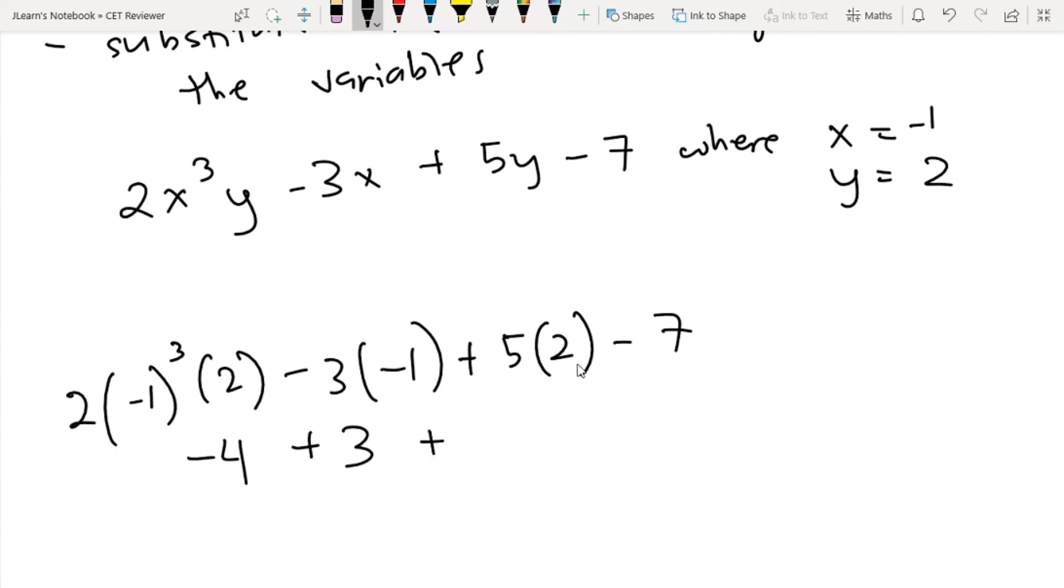Then plus 5 times 2 is 10, -7 is still -7. If you evaluate this, the result will be 2.